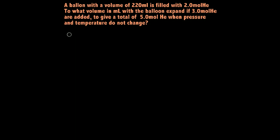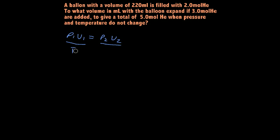Let's just kind of put them all together. We have Boyle's Law, which is P1 times V1 is equal to P2 times V2. We added in Charles' and Gay-Lussac's Law when we added temperature to those — T1, T2.